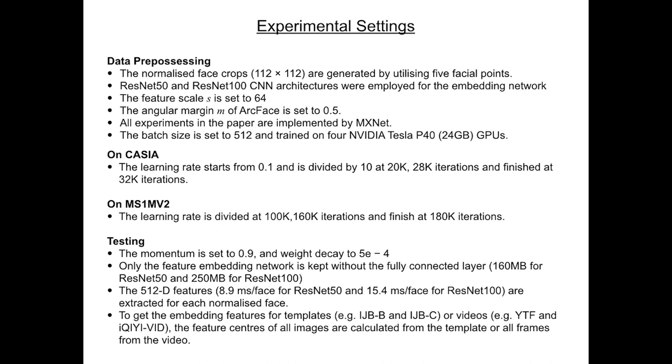On CASIA, the learning rate starts at 0.1 and is divided by 10 at 20K and 28K iterations, and the training process is finished at 32K iterations. On MS1MV2, the learning rate is divided at 100K, 160K iterations, and finished at 180K iterations.